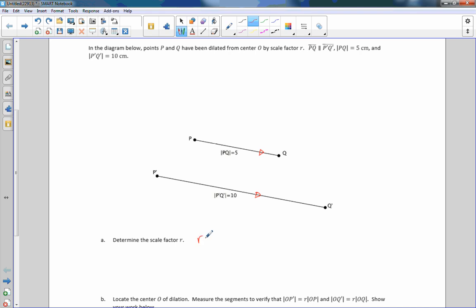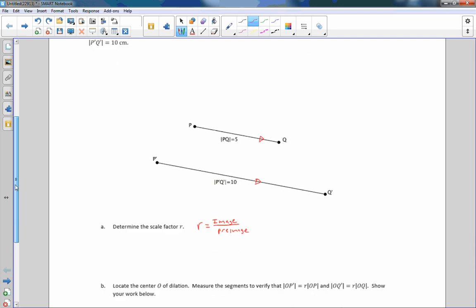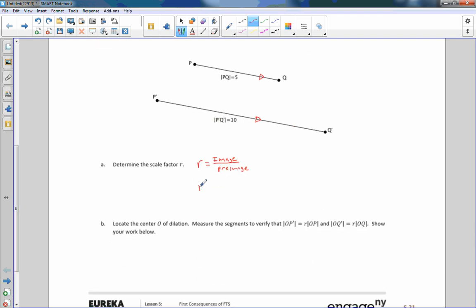Part A says to determine the scale factor R. So R equals the image divided by the pre-image. So if I fill out this formula, the image P prime Q prime divided by the length of PQ. Therefore, R equals 10 centimeters divided by 5 centimeters, which equals 2. So this was a scale factor of 2. The image is twice the length of the pre-image.